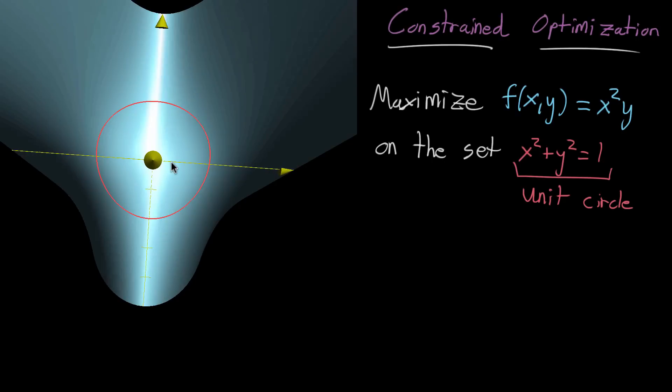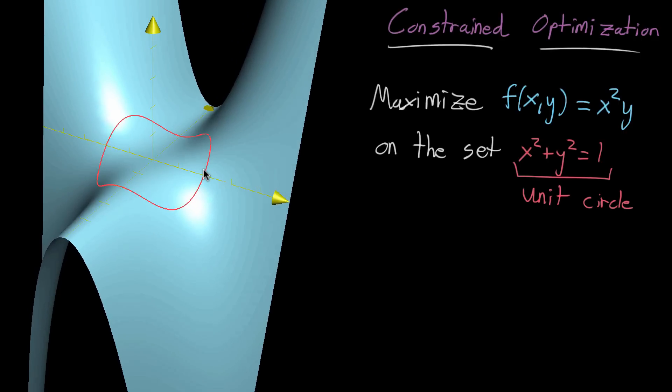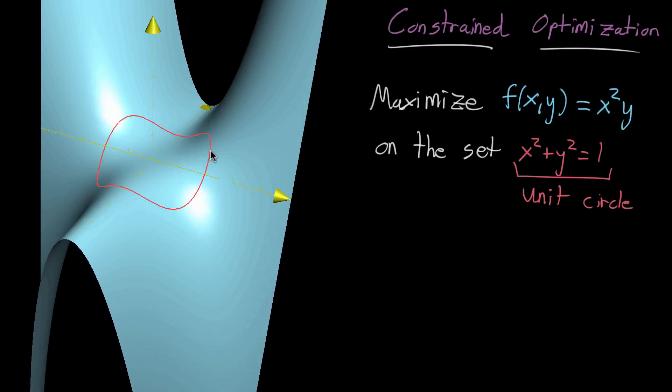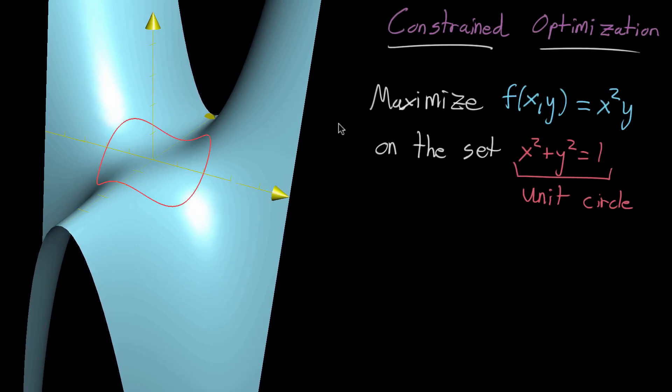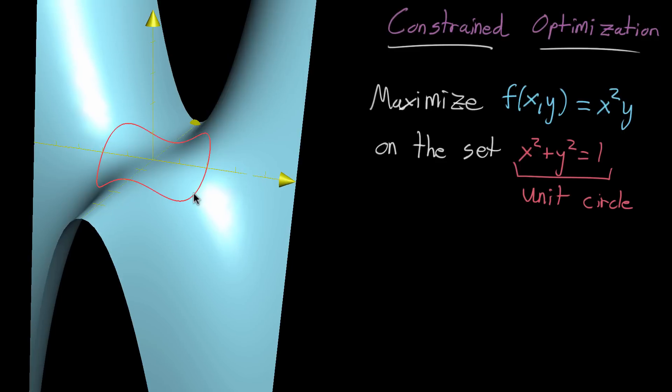And what I've actually drawn here isn't the circle on the xy plane, but I've projected it up onto the graph. So this is showing you basically the values where this constraint holds, and also what they look like when graphed. So a way you can think about a problem like this, is that you're looking on this circle, this kind of projected circle onto the graph, and looking for the highest points.